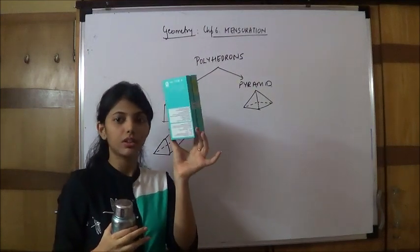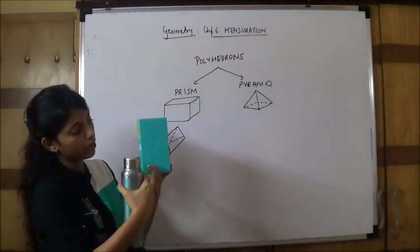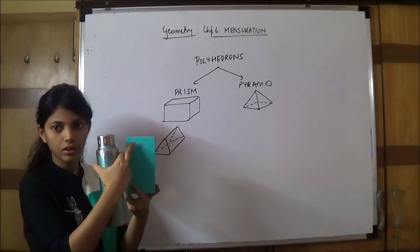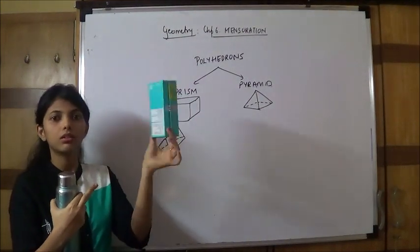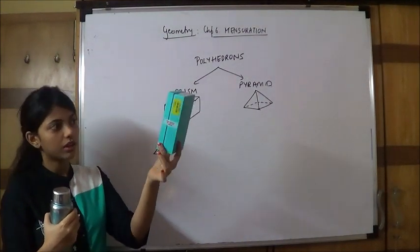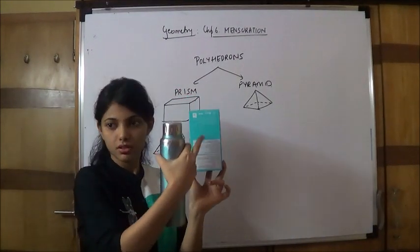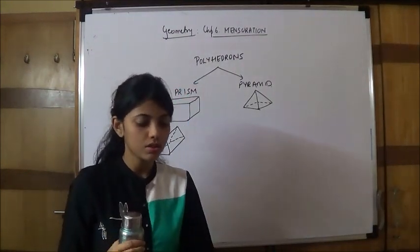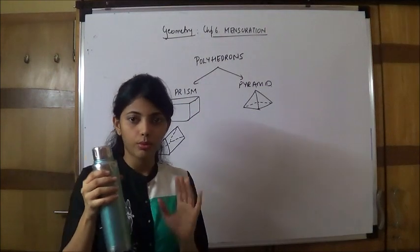All these 3D figures are called 3D figures. If I talk about this normal rectangle, it is a 2D figure and this cuboid is a 3D figure. So, 3D figures with straight surface areas, straight faces, are called polyhedrons and the curved ones are not called polyhedrons.